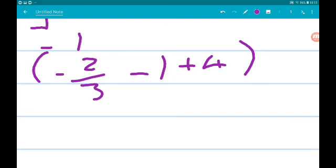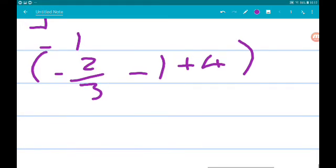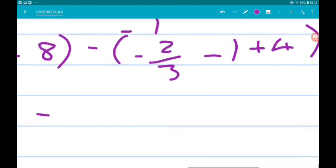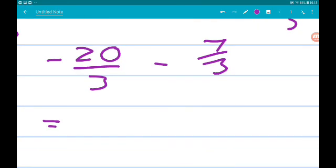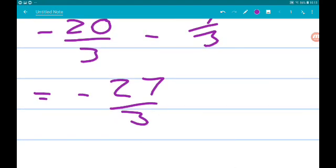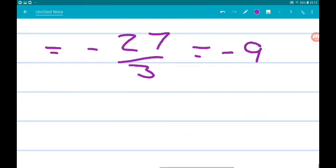Now in here, 1 is 3 thirds. So we got minus 2 thirds minus 3 thirds is minus 5 thirds. 4 is 12 thirds minus 5 thirds, so we got minus 7 thirds. So we've got minus 27 thirds. But it's an area. And actually that gives us minus 9. The reason that's negative is because we are under the x-axis. So A is positive 9.